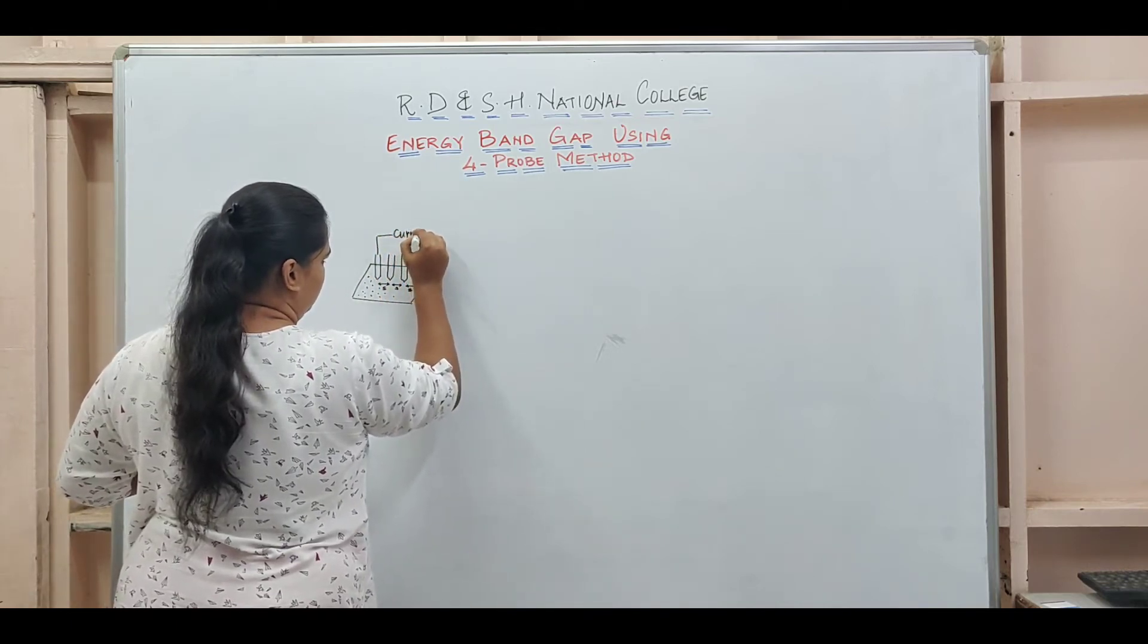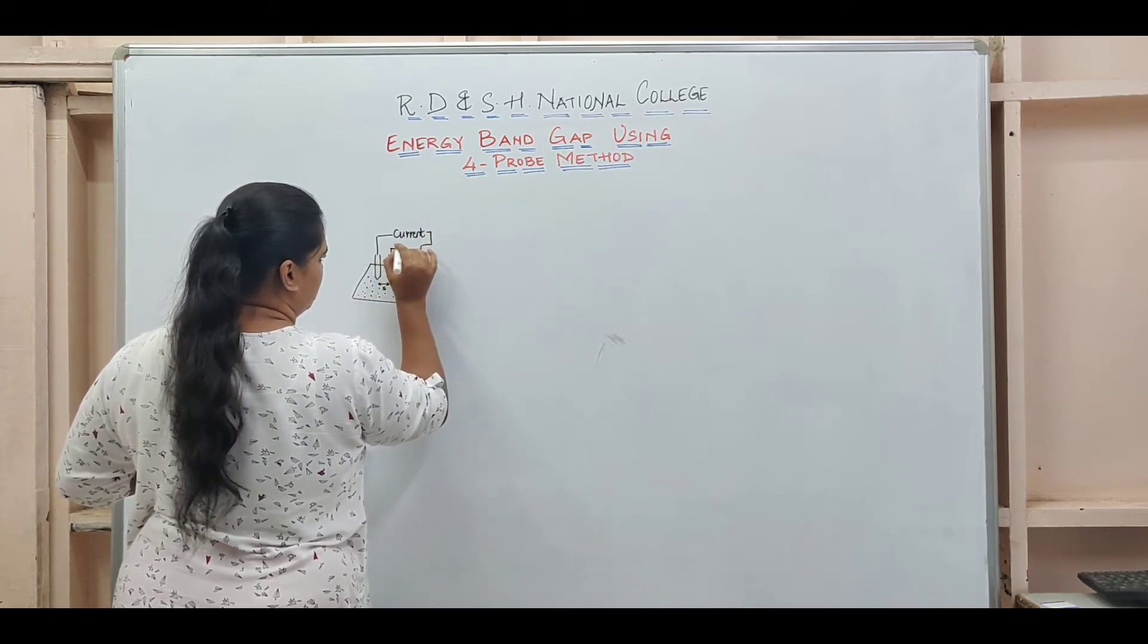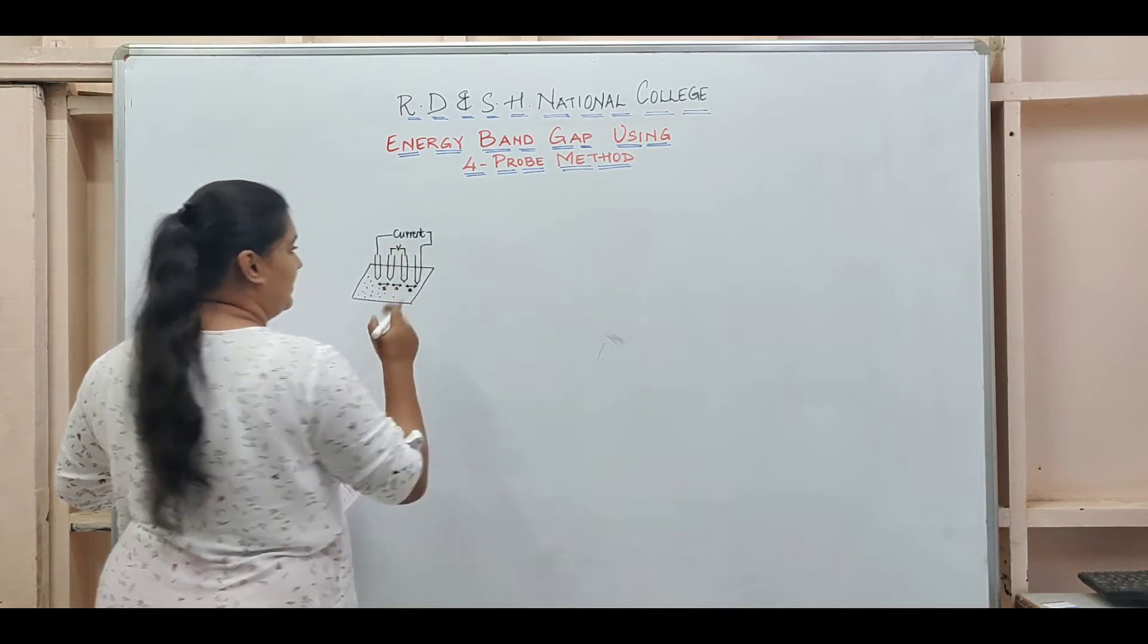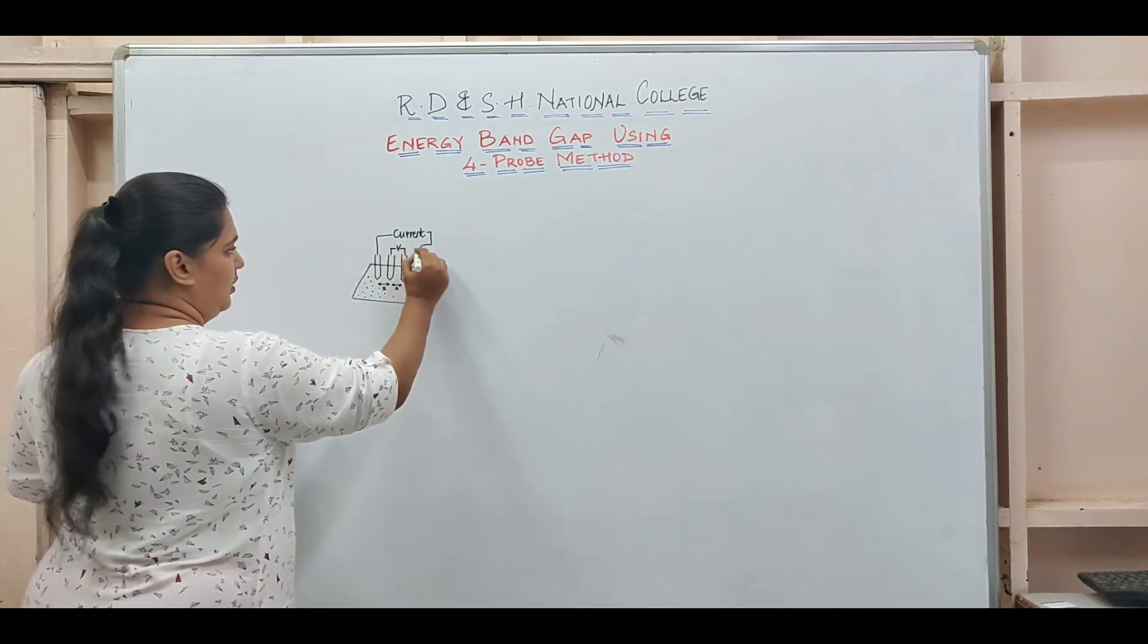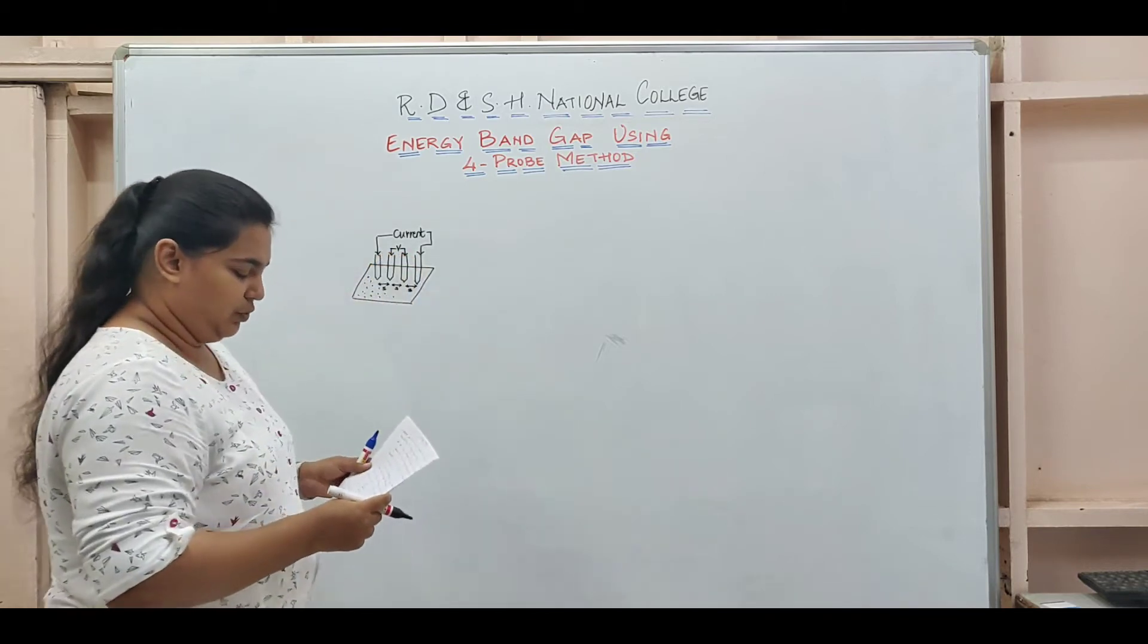Current is applied across the outer two ends of the probes, and voltage is measured between the inner two probes. So current is what we will supply between the outer two probes and voltage is what we will measure between the inner two probes.